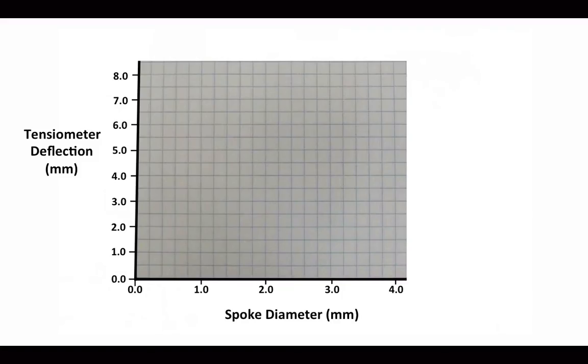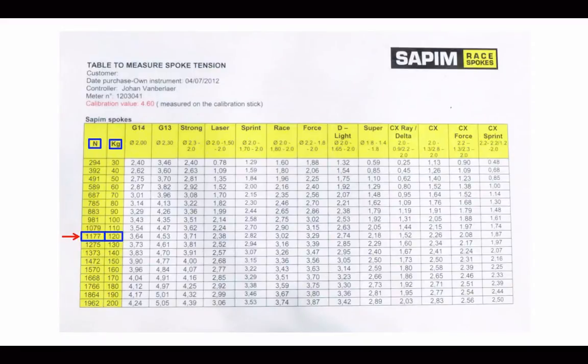I plotted a graph. The x-axis measures the spoke diameter in millimeters and the y-axis is the deflection of the tensiometer also in millimeters. Using the conversion chart that comes with the Sapim tensiometer, I looked at five diameters of spokes: a 1.5 millimeter, a 1.7, a 1.8, a 2, and a 2.3.